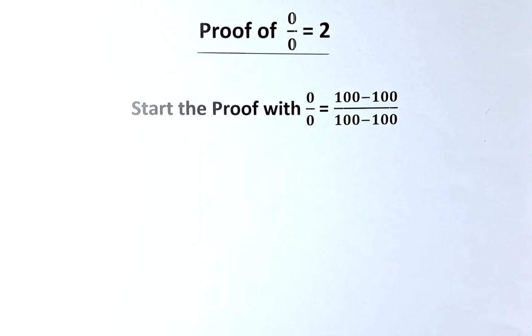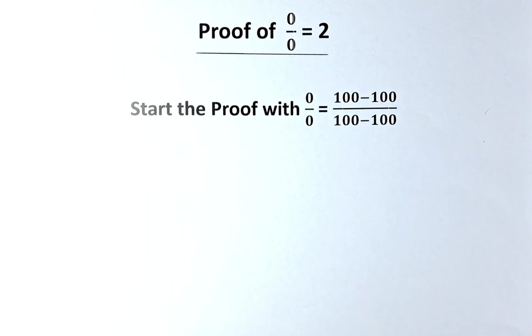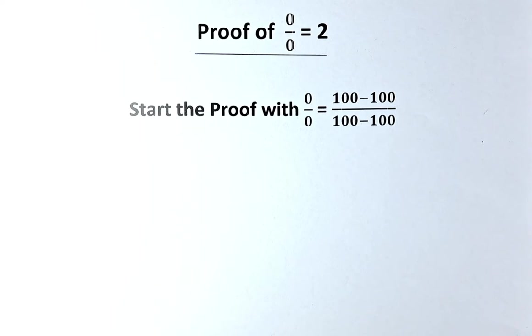Good day! In this video, we are going to do the incorrect proof of 0 divided by 0 equals 2. As I said, this is a misconception, it's a mathematical fallacy, and this is not true. So in this video, I would like you to find out which of the steps that I've made that have made this proof irrelevant.